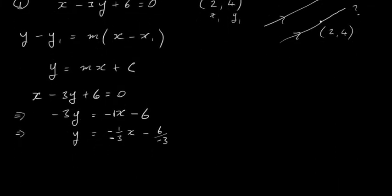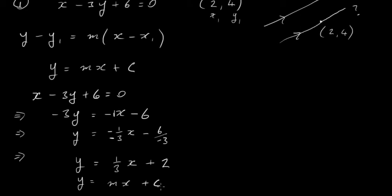So we end up with y equals one-third x plus 2. This is now in the form y equals mx plus c, so we can immediately read off that m equals one-third. As a matter of interest, the line cuts the y-axis at plus 2, but what we really want is just the slope. So we now know the slope of both the given line and the parallel line — both are one-third.